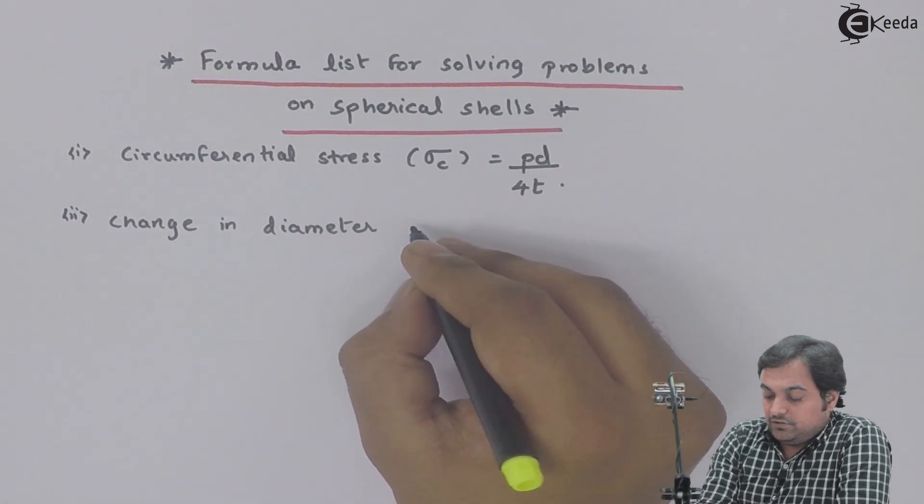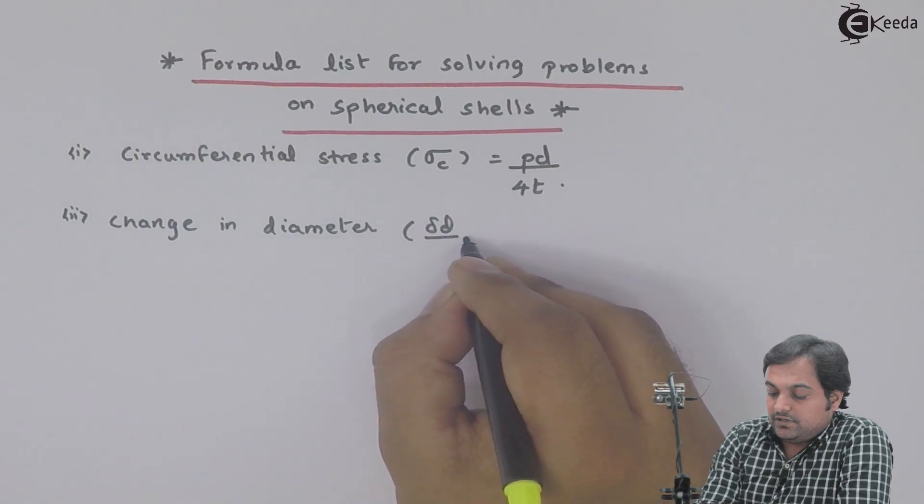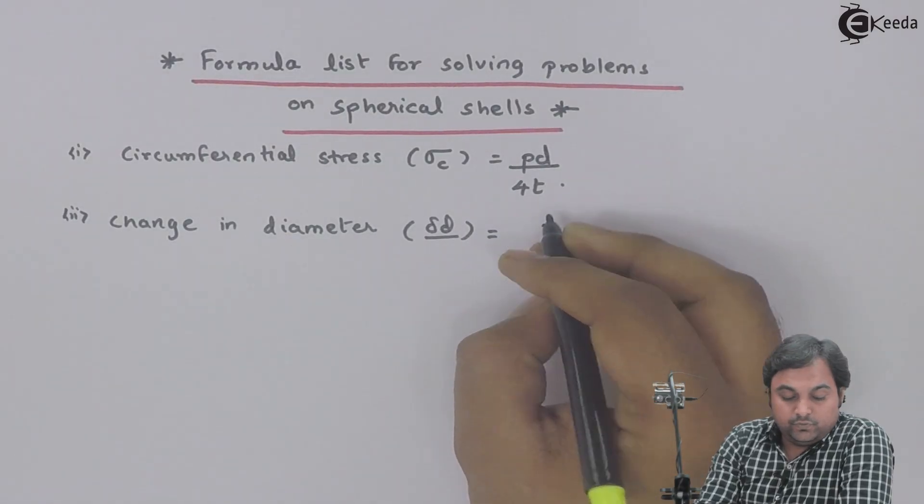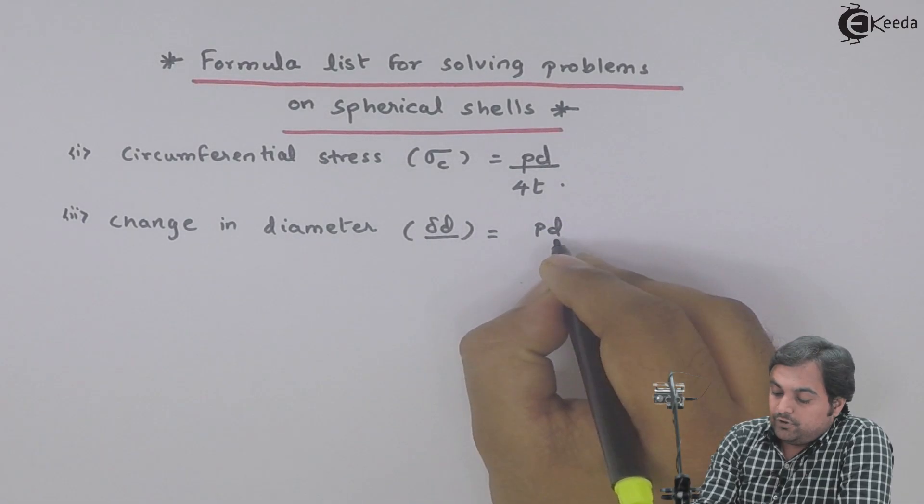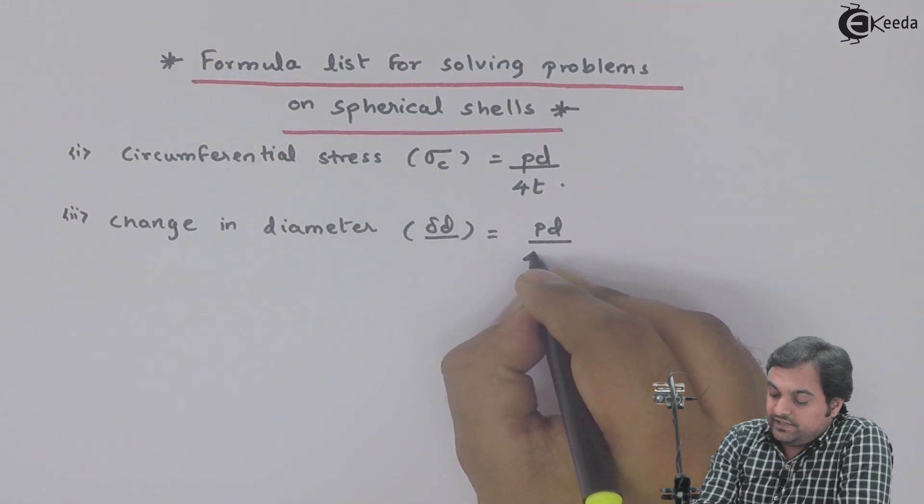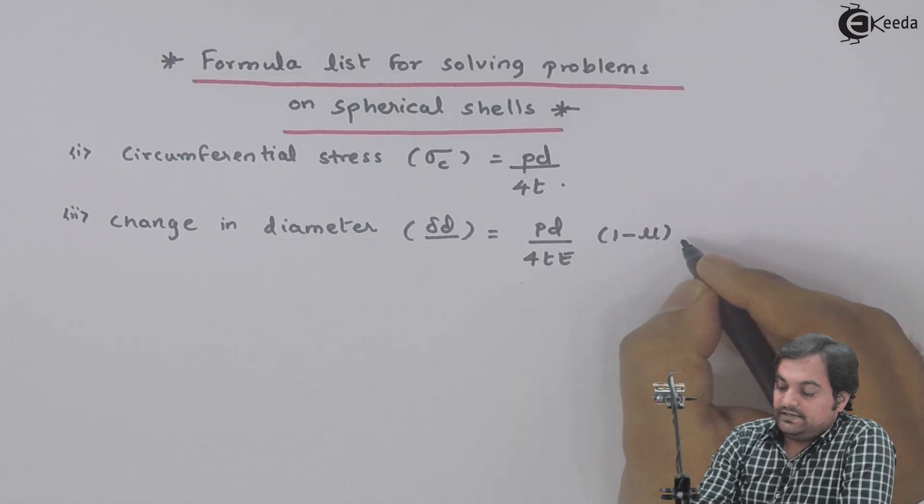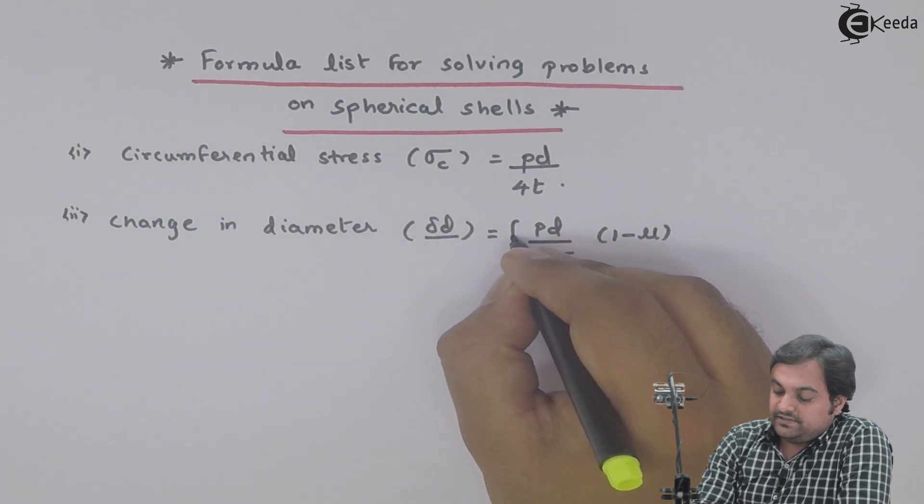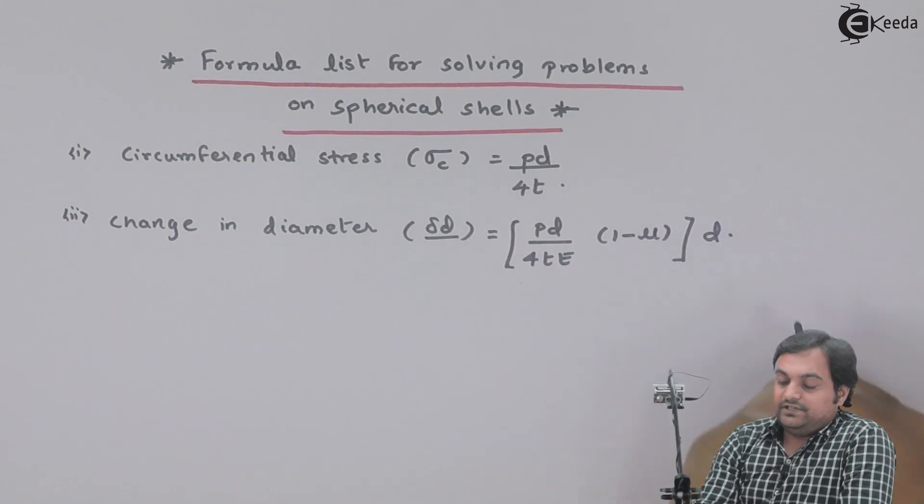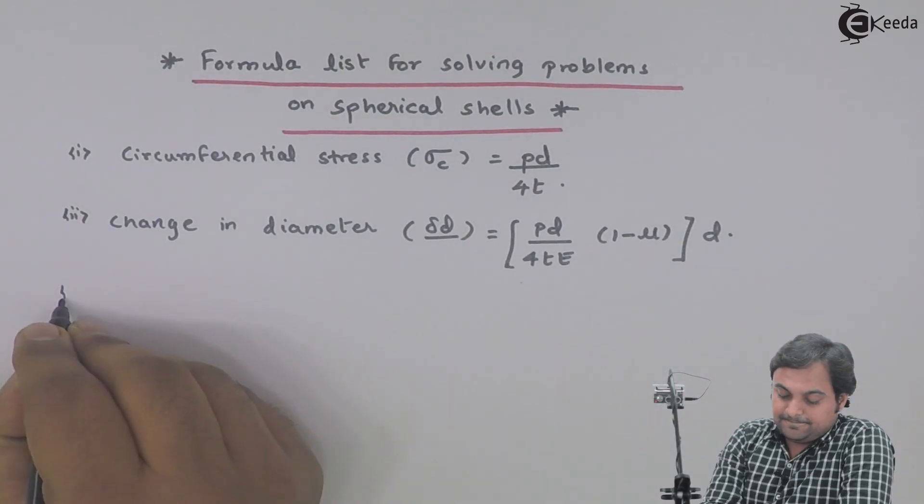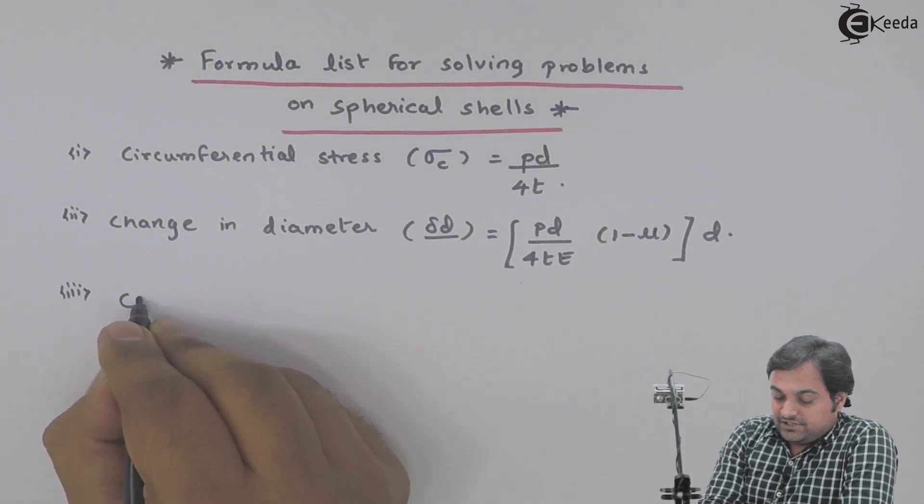Change in diameter will equal PD upon 4TE into bracket 1 minus mu, and I will multiply this by the diameter so that I get the change in diameter. Next is change in thickness.